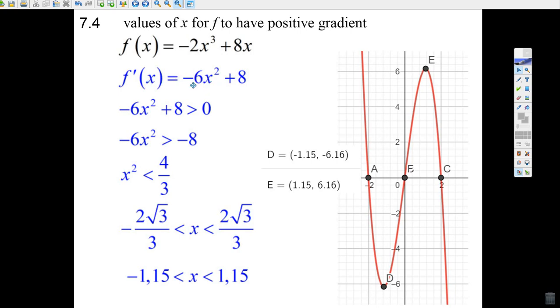This function will have positive gradients when the derivative is greater than 0. So, we just go minus 6x squared plus 8 is greater than 0. We subtract 8 from both sides of the inequality. We divide by negative 6 and change the direction of this sign. So, this whole thing is going to work when x squared is less than 4 thirds.